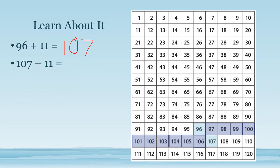Now let's do subtraction. We'll do 107 minus 11 by counting back by 1's. Let's start on 107 and take away 11: 1, 2, 3, 4, 5, 6, 7, 8, 9, 10, 11. We see that when we subtract 11, we took away a 10 and then took away one more. So 107 minus 11 equals 96.